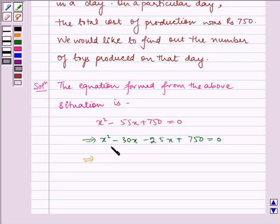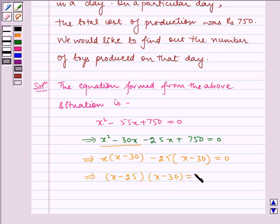Which implies taking x common we get x minus 30. Taking minus 25 common we get x minus 30 which is equal to 0. Which implies x minus 25 into x minus 30 is equal to 0.